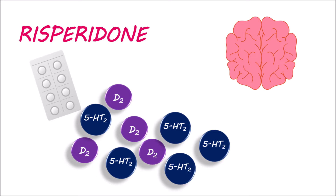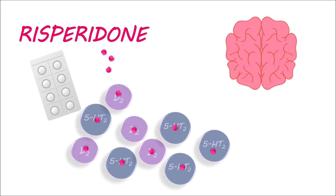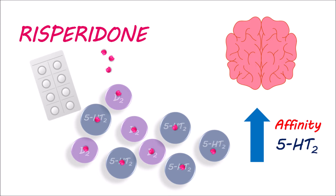Typical agents show their main action on dopamine D2 receptors in mesolimbic and mesocortical pathways. On the other hand, risperidone blocks both D2 and 5-HT2A receptors in the brain. Interestingly, this medication has more affinity for 5-HT2A receptors than D2 receptors. This ensures more activity against negative symptoms with fewer extrapyramidal side effects.